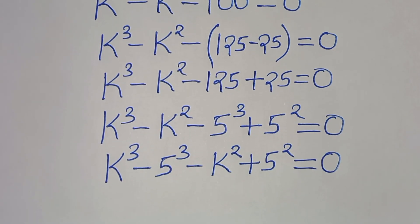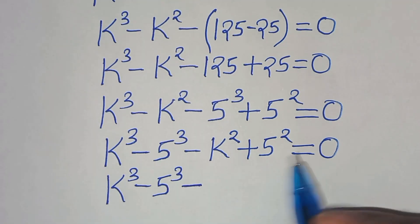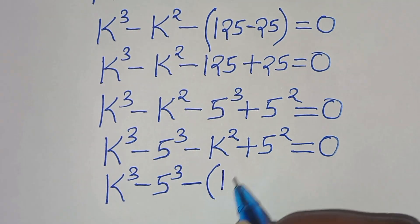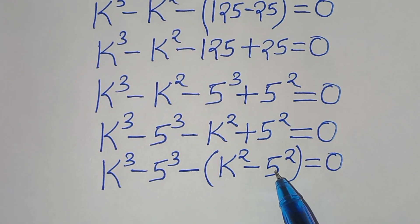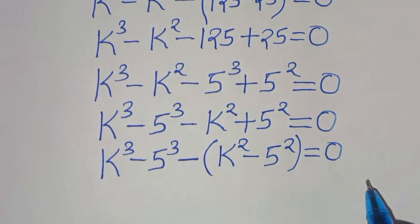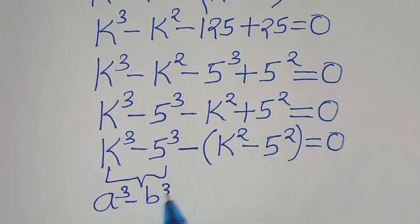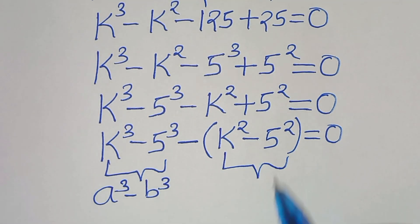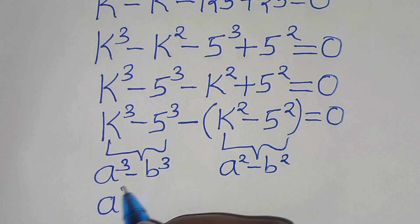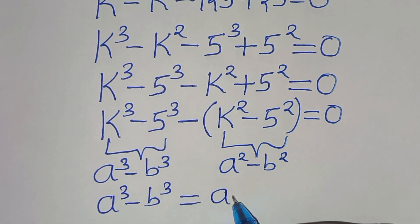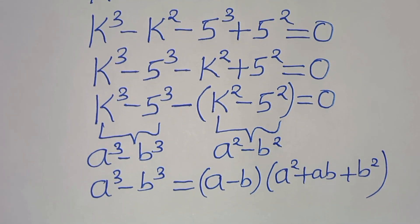From here we have k to the power of 3 minus 5 to the power of 3, subtract, in parentheses, k to the power of 2 minus 5 to the power of 2, equal to zero. Because minus times minus 5² is the same thing as plus 5². We have two parts here: the first part is the difference of two cubes expressed as a³ minus b³, and the second part is the difference of two perfect squares expressed as a² minus b². This implies that a³ minus b³ is the same thing as (a minus b)(a² plus ab plus b²).